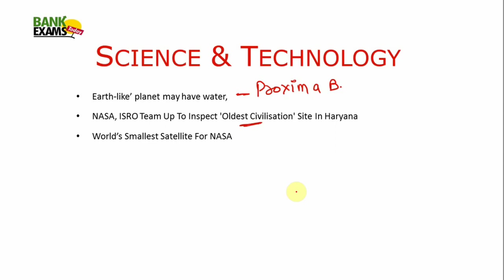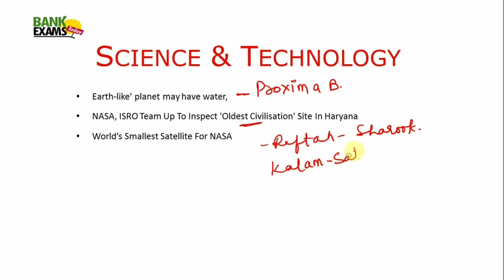The world's smallest satellite was built by a Tamil Nadu boy called Rifath Sharook, who named it Kalam SAT after former President Dr. APJ Abdul Kalam. The weight of this satellite is only 64 grams, and NASA is going to launch it on June 21.